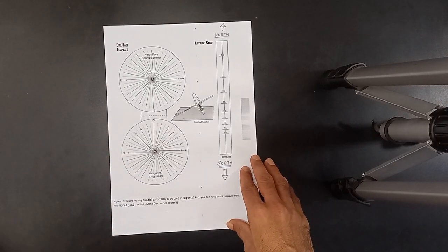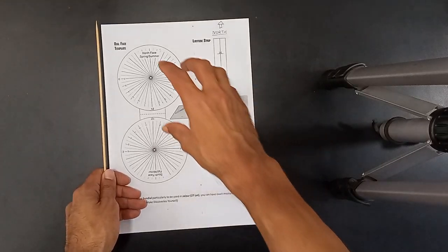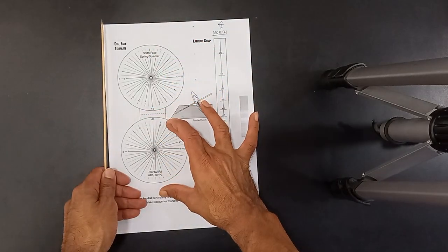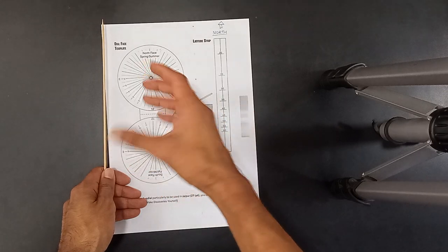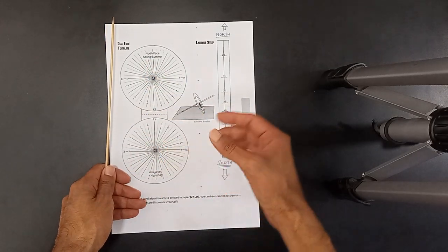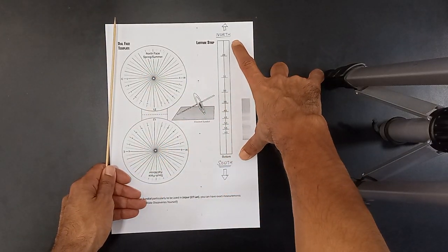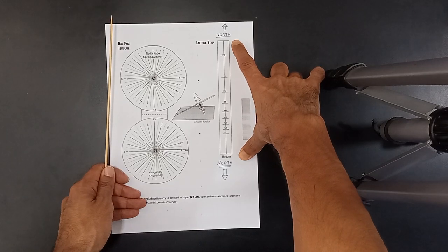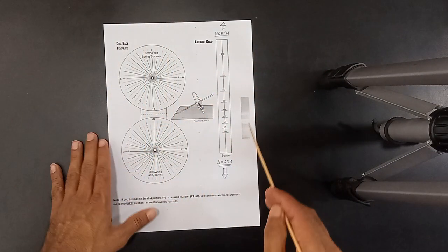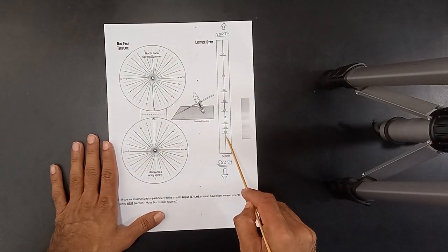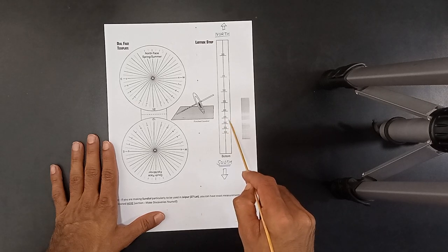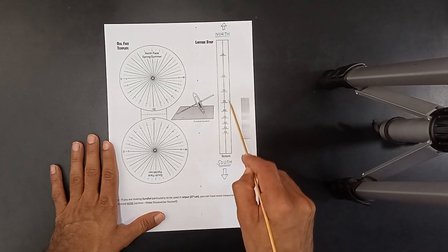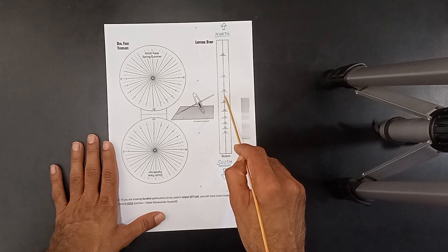Now what you have to do is you can see two circular faces over here which you will be cutting out from this page later, and you see a latitude strip over here. What this latitude strip means is the points at these latitude strips show the angle of latitude, the latitude angle of your place.